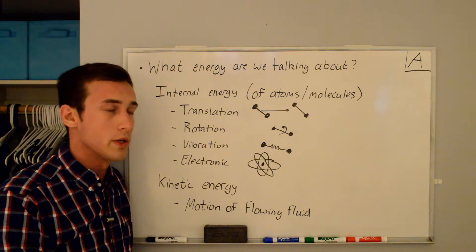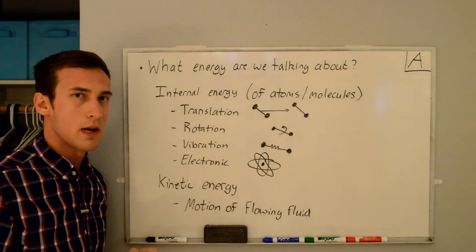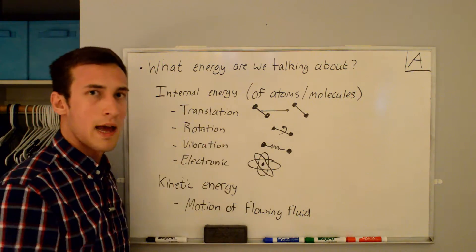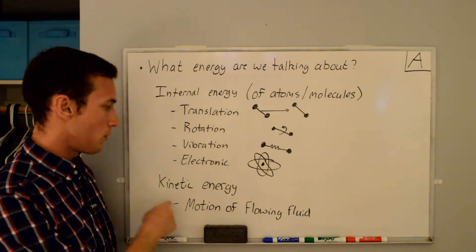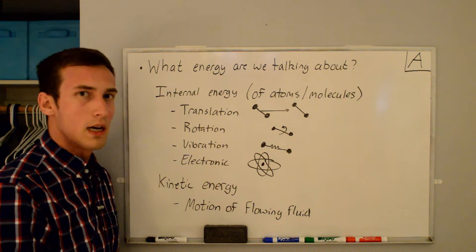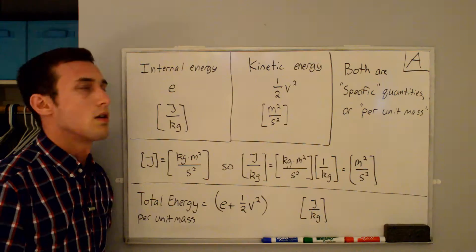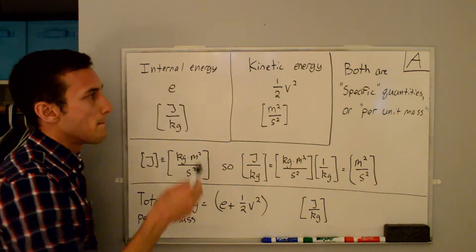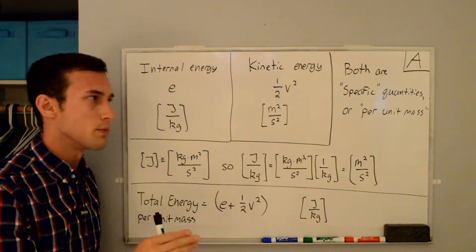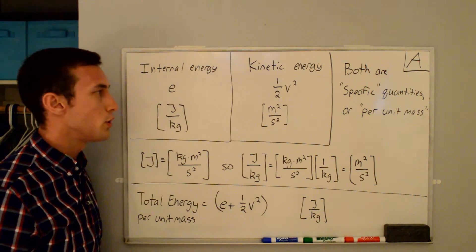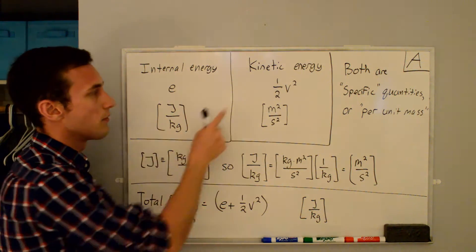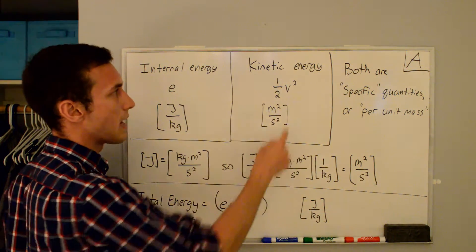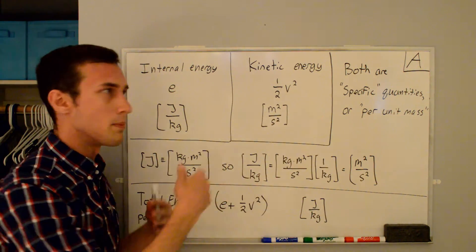The first important thing to discuss is what type of energy we're talking about. We have internal energy — the molecules or atoms have a certain internal energy due to translation, rotation, vibration, and the movement of atoms around the nuclei. Because the fluid is flowing, it also has kinetic energy. The combination of internal energy and kinetic energy gives us the total energy we're conserving. Both of these are specific quantities, meaning per unit mass. The symbol is lowercase e for internal energy, with units of joules per kilogram [J/kg]. For kinetic energy, you're probably used to ½mv², but since it's per unit mass, we divide by m and get ½v².